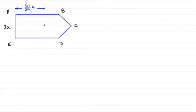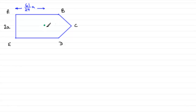For this part, we're told that this lamina is suspended from point A, and we've got to find out the angle that the edge AB makes with the downward vertical. To appreciate problems like this, you should be familiar with the fact that the centre of mass — which we found in the earlier part — was a distance of 61/27 A away from this edge AE.